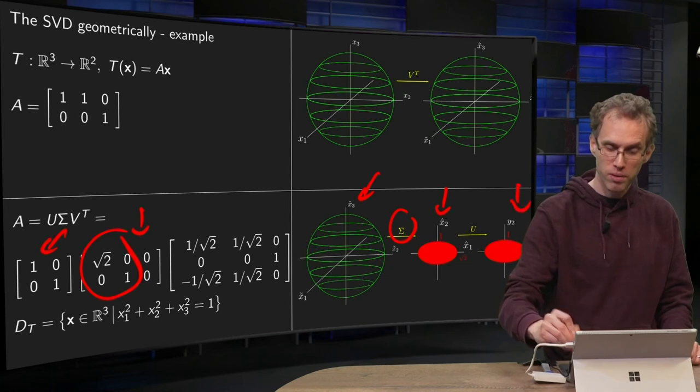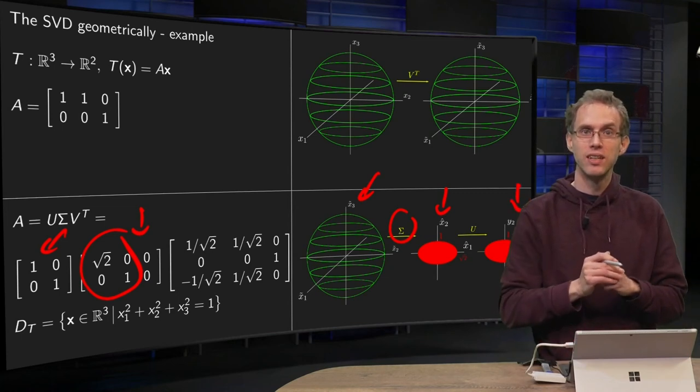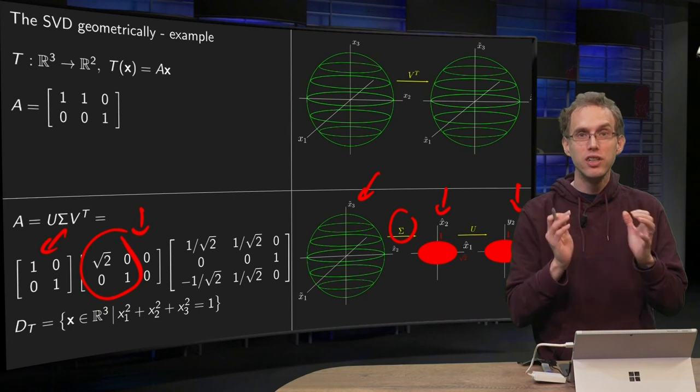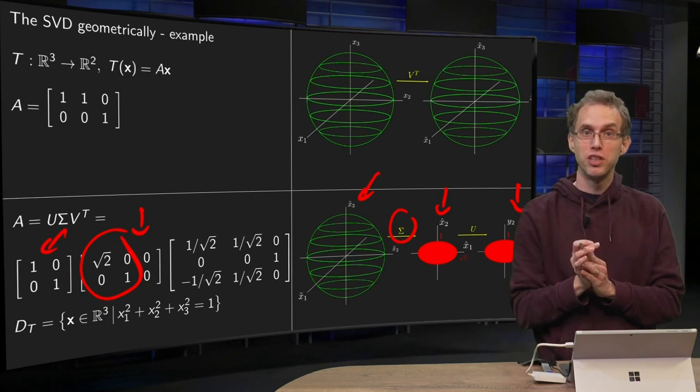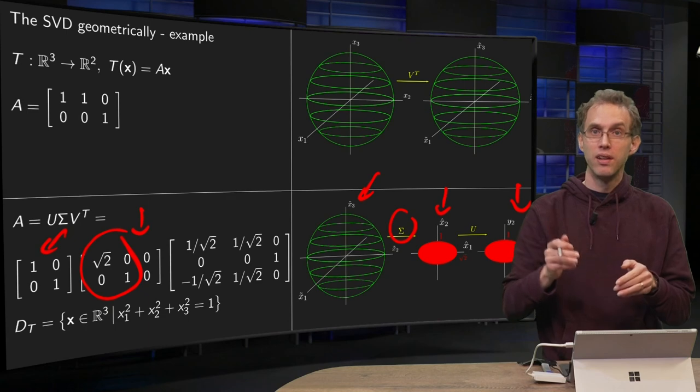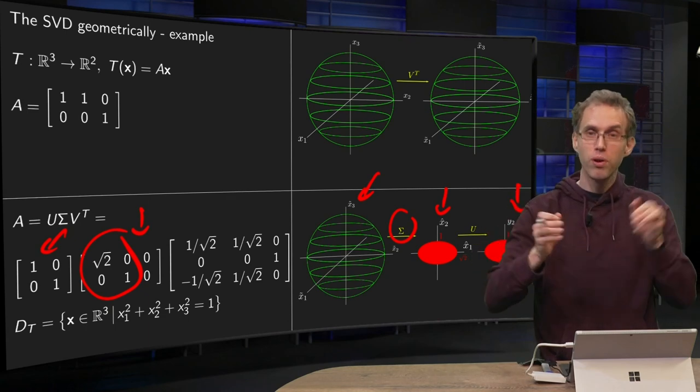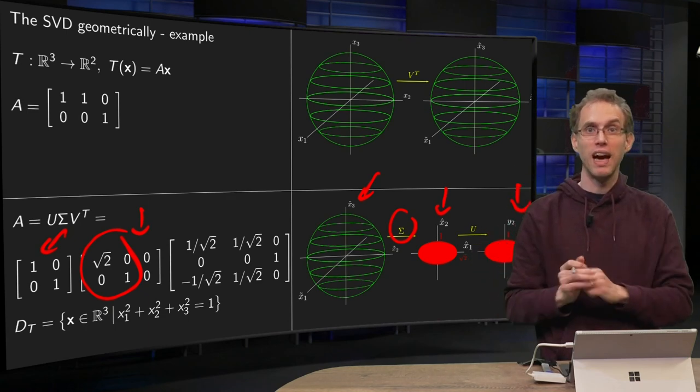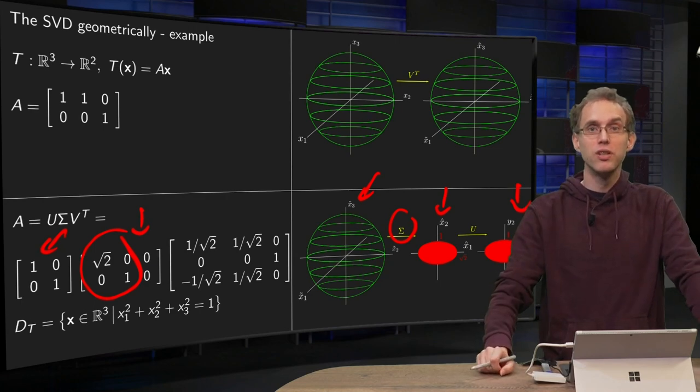So U leaves your ellipse as it is. That is how you can read a singular value decomposition geometrically: read from right to left, the matrices on the borders are not doing much, and most of the action is, as always, done by the Σ matrix in the middle.